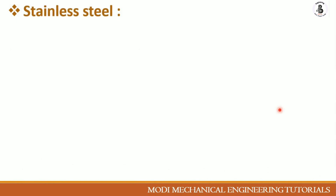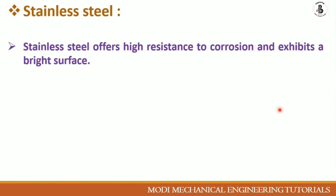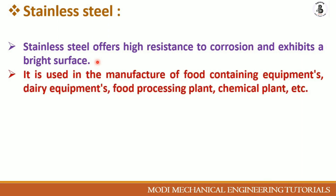Stainless steel offers high resistance to corrosion and exhibits a bright surface. It is widely used in household applications, food processing plants, chemical plants, dairy equipment, and dairy manufacturing components.